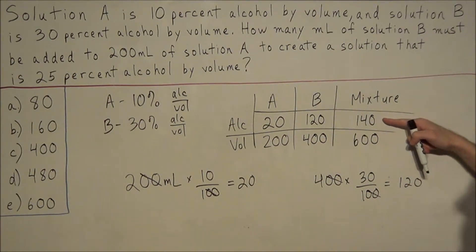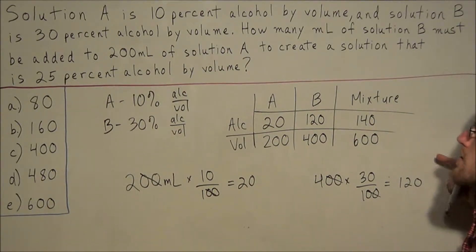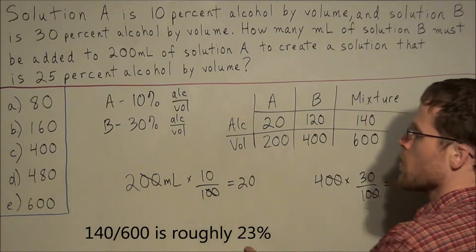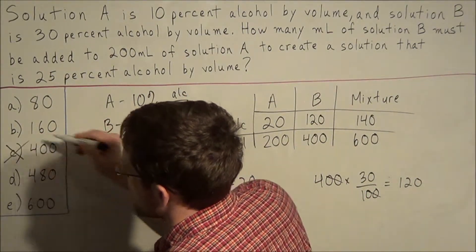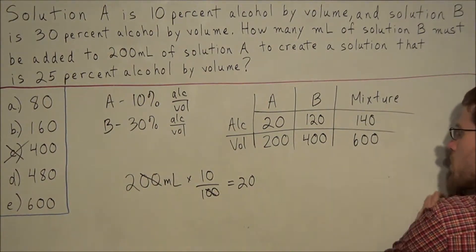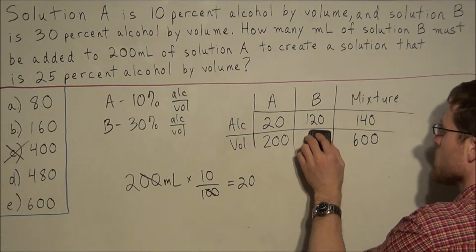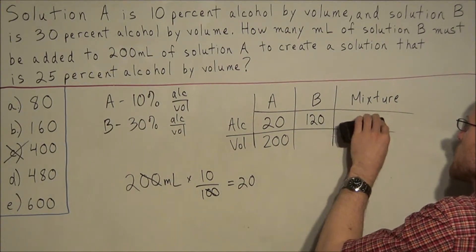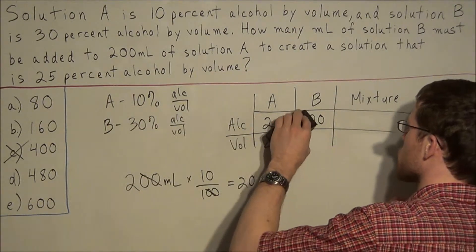So now the end mixture would have 20 plus 120 or 140 milliliters of alcohol and 200 plus 400 or 600 milliliters of solution. But then when we check, 140 divided by 600 wouldn't give us 25%. So this would tell us right off the bat that solution C is out. So then what we would do from here is we would have to check out other answer choices. As you can see, this method of substitution is not always the best method because you have 5 answer choices to choose from.